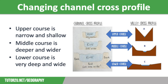So why does a channel cross profile change as you move downstream? Hydraulic action and abrasion are the main processes of erosion in the upper course. As the river flows downstream, the volume of water increases as many tributaries join the main channel. This increases the river's energy and its ability to erode, so it cuts a deeper channel as it flows downstream.